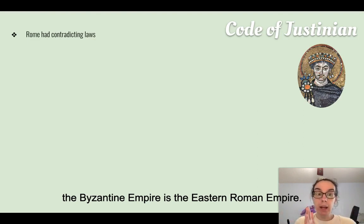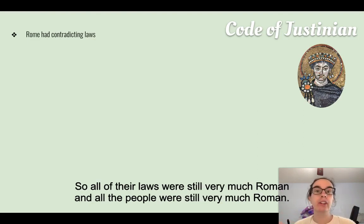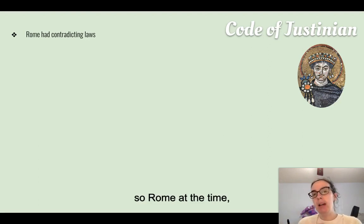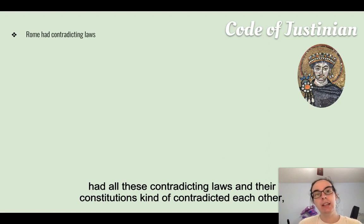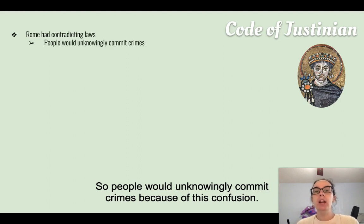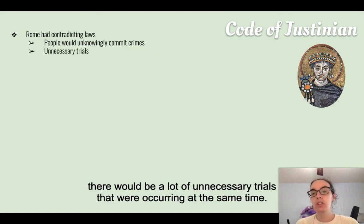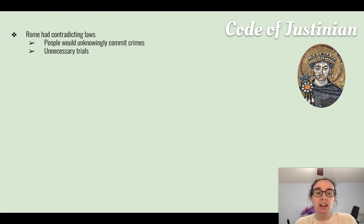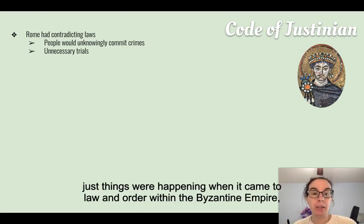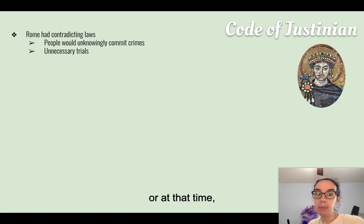Rome at the time had all these contradicting laws, and their constitutions kind of contradicted each other. Because of this confusion, people would unknowingly commit crimes, and there would be a lot of unnecessary trials occurring — a lot of unnecessary things happening when it came to law and order within the Byzantine Empire.